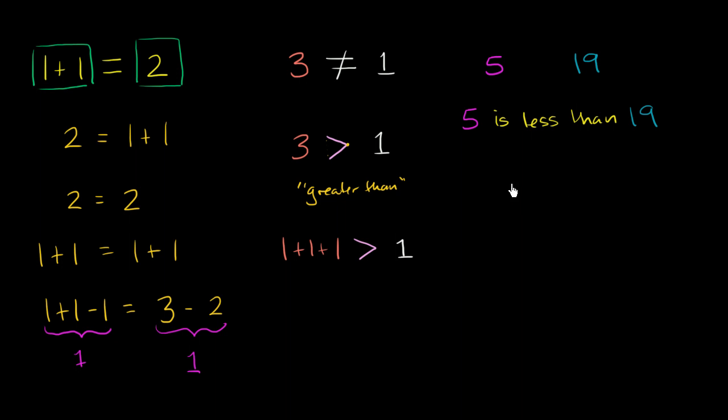And so we just have to think of a mathematical notation for writing is less than. Well, if this is greater than, it makes complete sense that let's just swap it around. Let's make, once again, the point point towards the smaller quantity and the big side of the symbol point to the larger quantity.